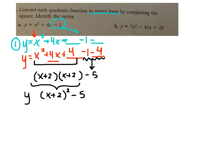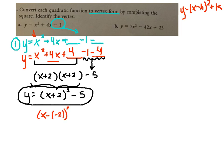So our final equation will be y equals x plus 2 quantity squared minus 5. And that's in vertex form. And then it says identify the vertex. Now remember, vertex form. Vertex form is y equals x minus h squared plus k. So you need to have a minus h.